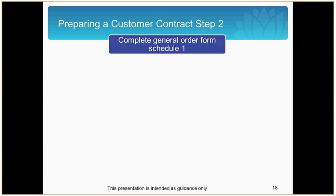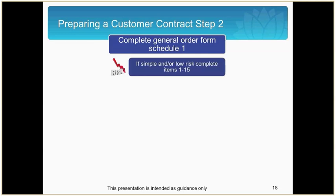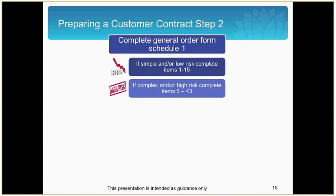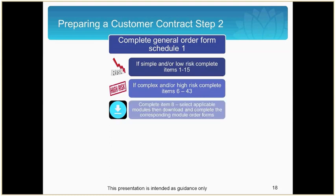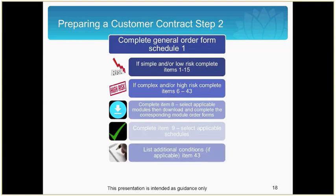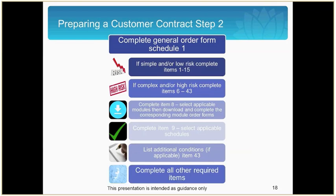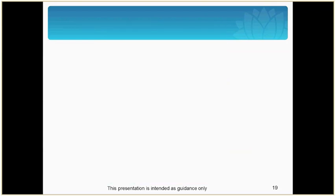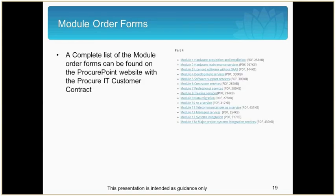The second step in preparing a customer contract is to complete the general order form, Schedule 1. If your contract is simple and low risk, complete items 1 to 15. If it's complex or high risk, complete items 6 to 43, remembering item 7 is for panels only. Complete item 8, which is to select applicable modules to download and complete the corresponding module order forms. Complete item 9, which requires you to select the applicable schedules. List additional conditions, if applicable, in item 43 and complete all other required items. Module order forms can be found on the ProcurePoint website on the same page as the long form contracts, as well as on the beta website.